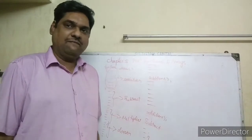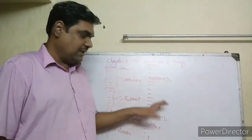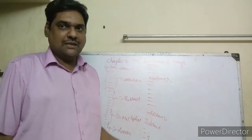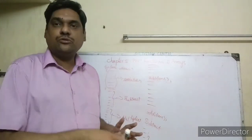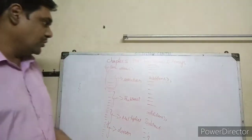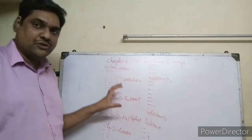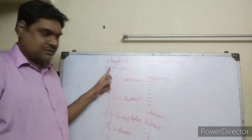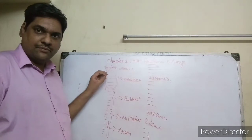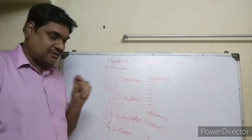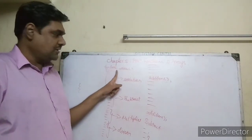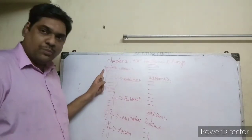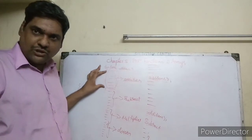Let us continue with the functions concept. Let us see with an example — no extra concepts. This is the function definition. Use the function keyword with a small 'f' — not capital 'f' — because PHP is case sensitive. Use a function space, then the function name, any name you can give, open and close brackets, open curly braces, and write the code of the function.